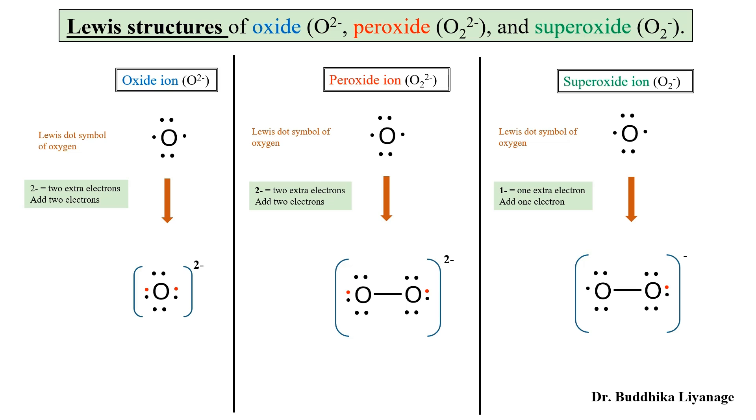After making the covalent bond, one single electron remains on each oxygen. So the extra electron makes a pair on one of the oxygen. Here I make a pair on the right hand side oxygen; the other oxygen still has a single electron remaining. We call this a radical because it has a single electron. This is superoxide ion Lewis structure with one minus charge.